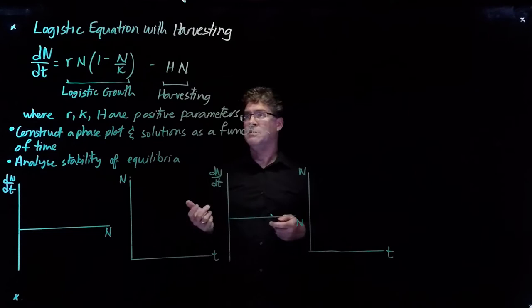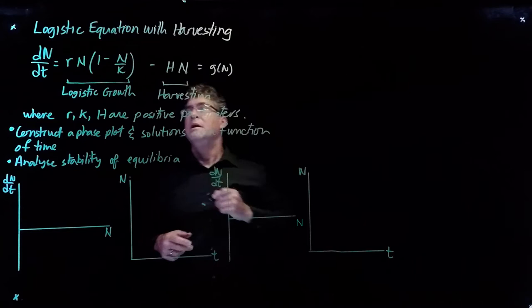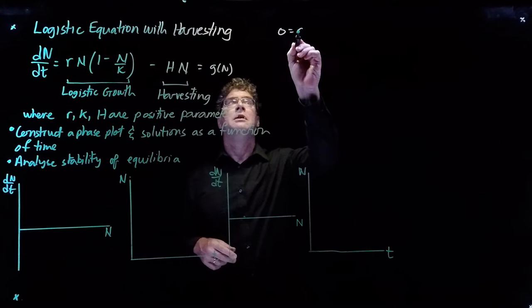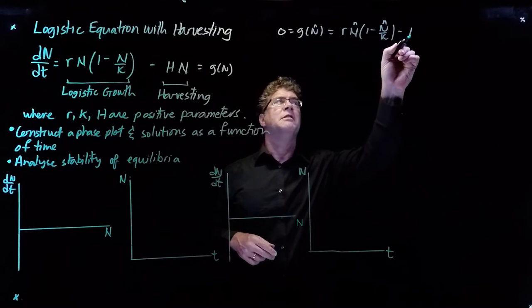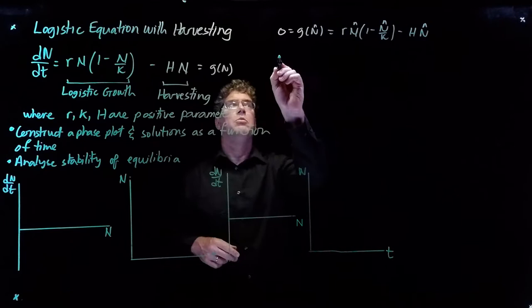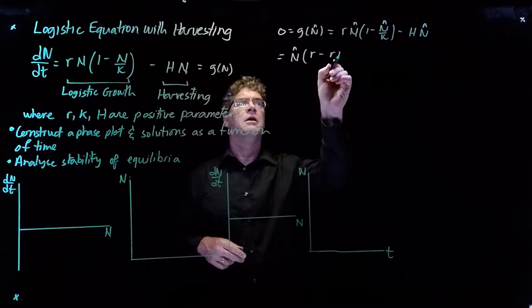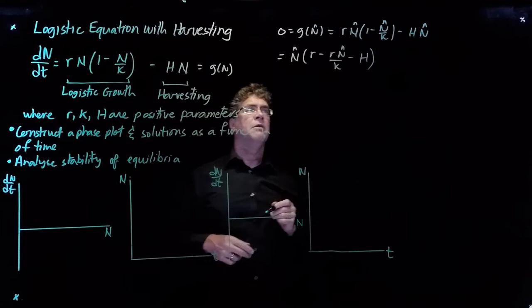Let's start by looking at equilibria. We'll call this our function g of n, and for an equilibrium we have 0 equal to g of n-hat, which equals r·n-hat·(1 minus n-hat over K) minus h·n-hat. Let's pull out the common factor n-hat, leaving us with r minus r·n-hat over K minus h.